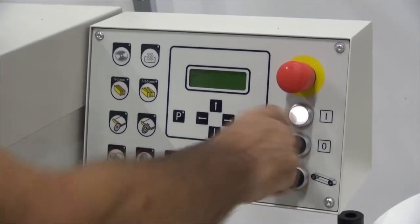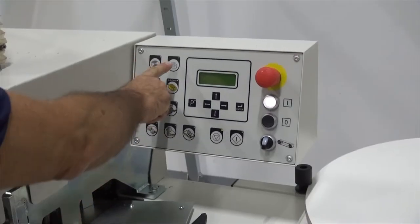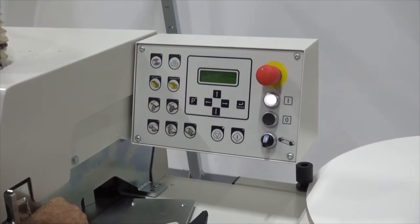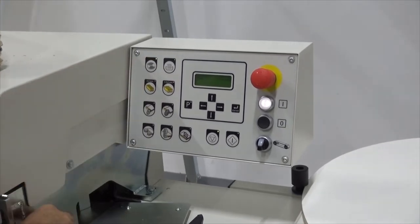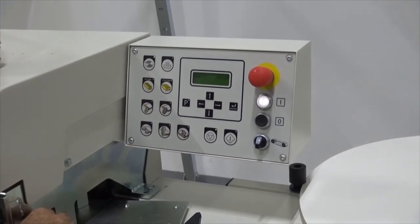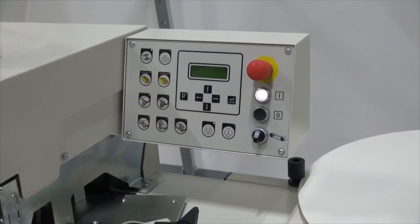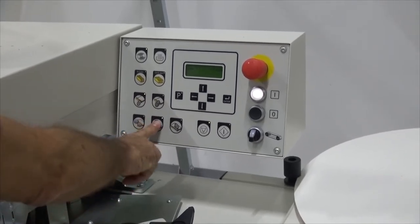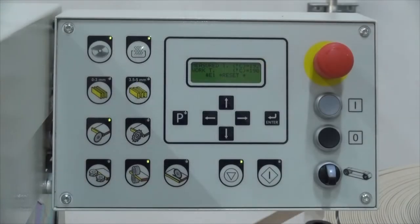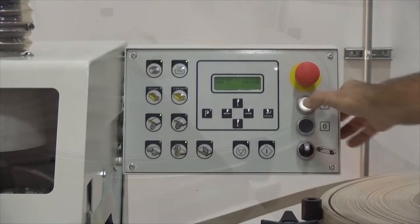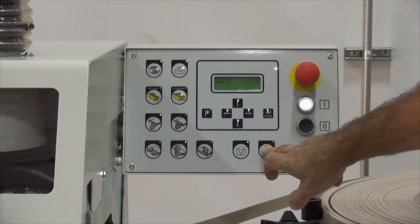Turn on the main control panel and the glue pot will start to heat up. Then select the stations you want involved in the processes. Once the glue gets to the right temperature, you can turn on the stations and the feeder.